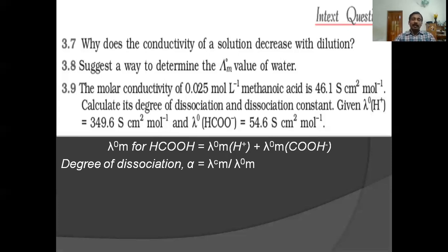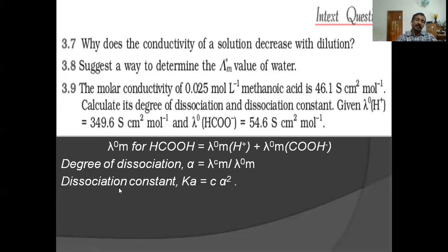To calculate degree of dissociation, α = λMC / λM⁰. λMC is given at concentration 0.025 mol/L, which is 46.1. λM⁰ is calculated by adding 349.6 and 54.6. Substitute to get α. To calculate dissociation constant, Ka = C·α², where C = 0.025 mol/L. Substitute the values and find out Ka.